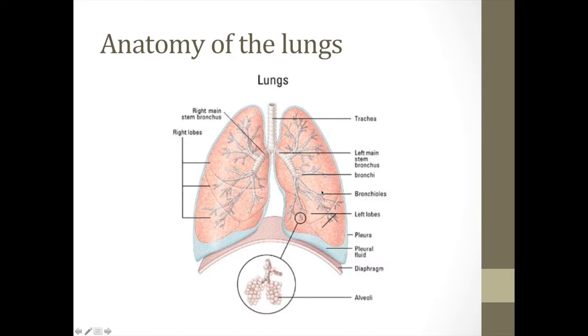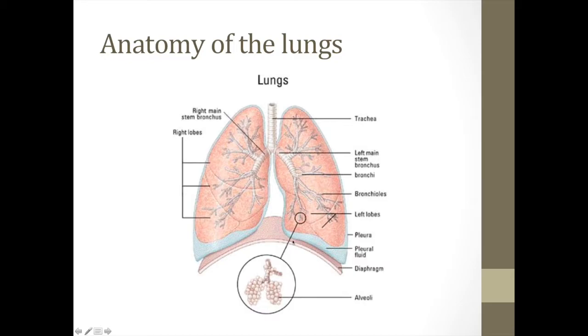The lungs are encased in pleura, which are a two-membrane system. The first membrane is attached to the lung itself, and the second layer of the pleura is attached to the chest wall, all the way around the thoracic cavity. It coats everything but the mediastinum.